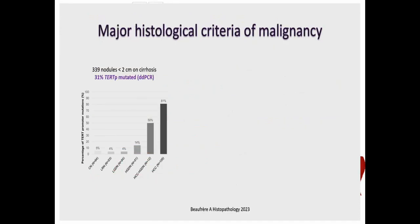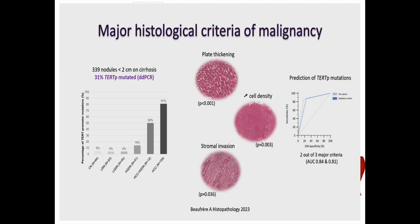To do so, we performed a morphological study with a molecular approach including more than 300 hepatocellular nodules less than 2 cm developed on cirrhosis. We were able to identify three markers — plate thickening, increased cell density, and stromal invasion — which were independently and strongly associated with the presence of TERT promoter mutations.